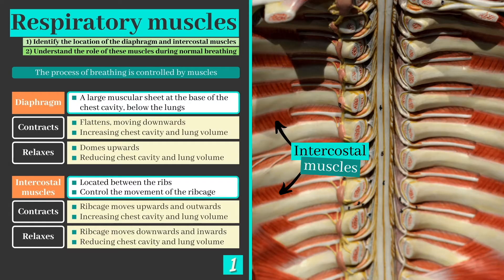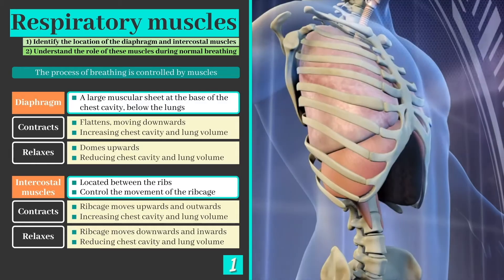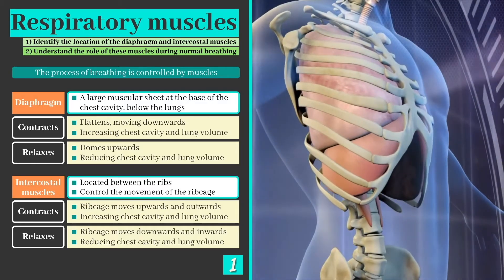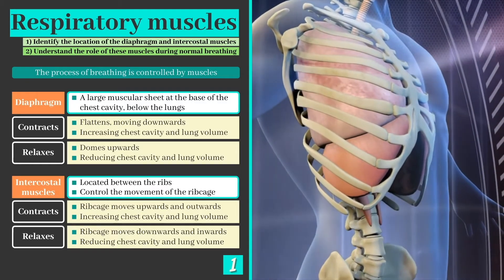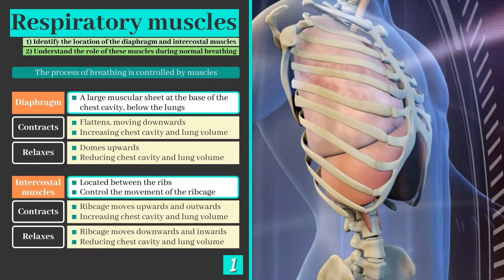The intercostal muscles sit just between the ribs. They cause the rib cage to move up and outwards as they contract, and down and inwards as they relax.